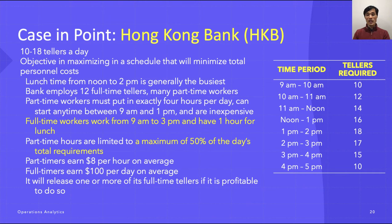By corporate policy, the bank limits part-time hours to a maximum of 50 percent of the day's total requirement. Part-timers earn $8 per hour, which is $32 per day on average, and full-timers earn $100 per day in salary and benefits on average. The bank would like to set a schedule that minimizes total personnel cost, and it will release one or more full-time tellers if it is profitable to do so.